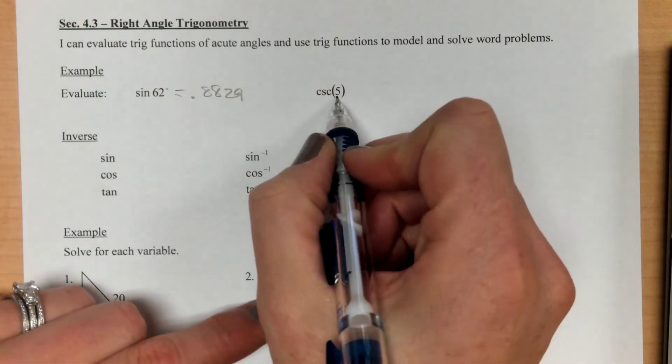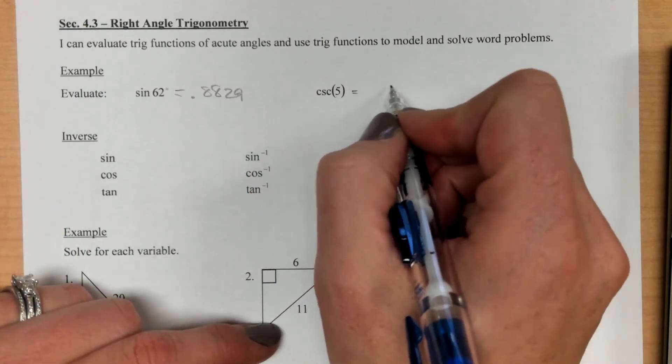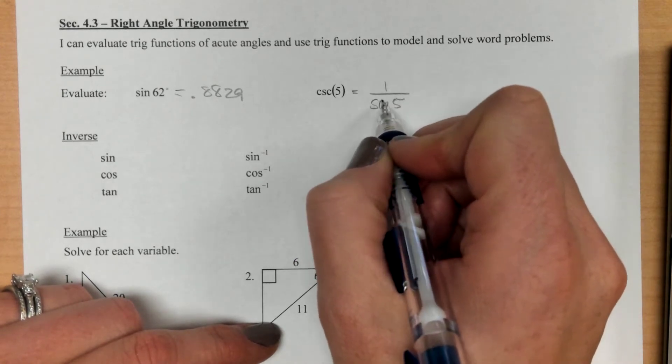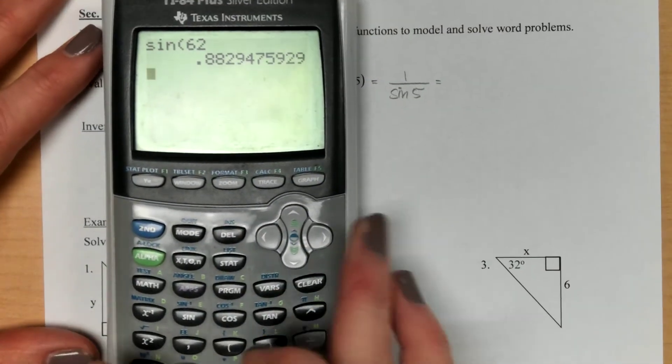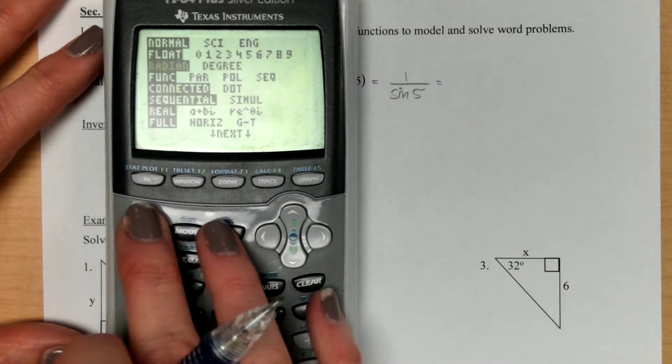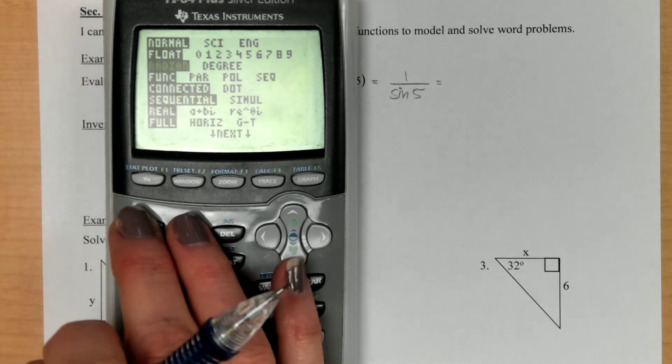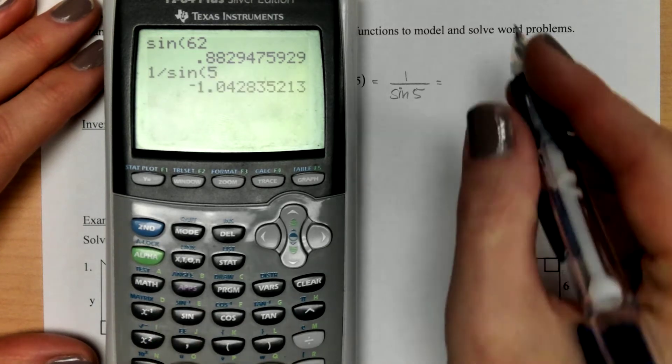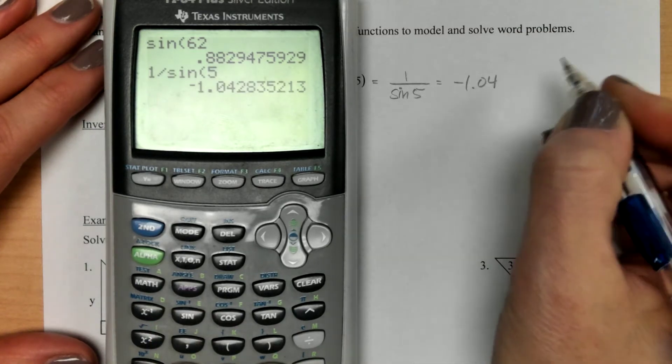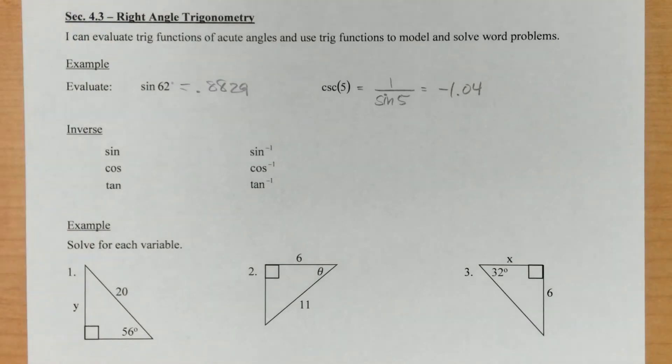And then for cosecant of 5, we had talked about how cosecant is the flip of sine. So what we really want to know is the sine of 5 and then we want to flip that answer. This does not have a degree symbol on it, which means we need to be in radian mode. So I'm going to go back to mode, I'm going to switch over to radian just by highlighting it and then hitting enter. And then I am doing 1 divided by the sine of 5. So I get about negative 1.04. So you might want to just add to your notes, you need to watch the mode that you're in for each problem that you're doing. I would say probably 95% of the time it's going to be degrees. And then the other one or two times you're going to have a radian and you'll need to switch over.